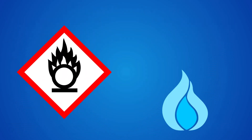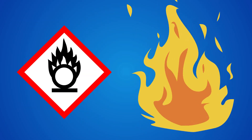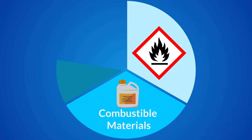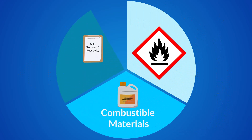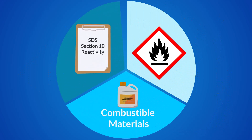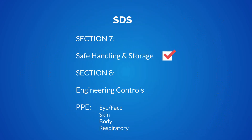The oxidation symbol is used on substances that can cause or intensify fire. The critical hazards are flammable and combustible materials and conditions listed in section 10. Other considerations are listed in sections 7 and 8 of the SDS.